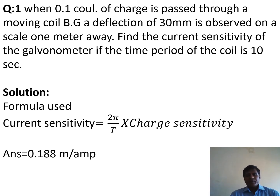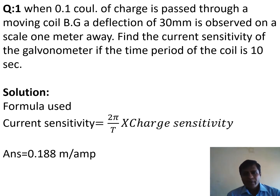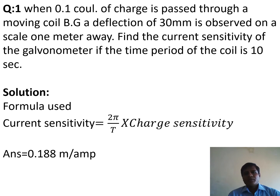Solution. The formula used here is: current sensitivity = (2π / T) × charge sensitivity. And we know that charge sensitivity = deflection / charge. So the deflection here is 30 millimeters, which in meters is 30 × 10⁻³ meters, divided by 0.1 coulomb. This gives the charge sensitivity.